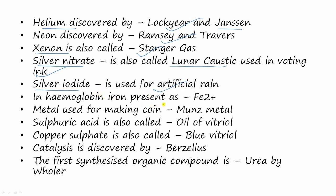In haemoglobin, iron is present in the form of Fe2+. The metal used for making coins is Moon's metal. Sulfuric acid is also called oil of vitriol, and copper sulfate is also called blue vitriol. Catalysis was discovered by Berzelius.